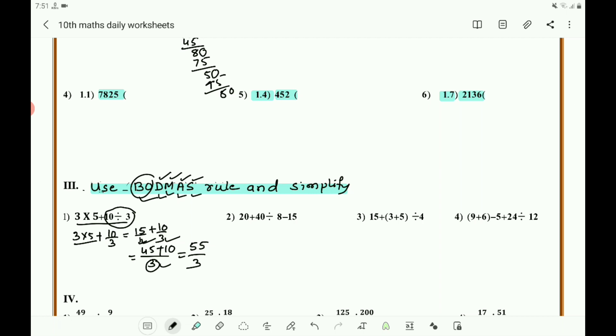If division is there, do division first. If bracket is there, open the bracket first, then do division, then multiplication, then addition, then last subtraction. Here bracket is there, so you must simplify the bracket. You will get 8, 15 + 8 = 23. Don't add this here yet. What you have to do is divide.